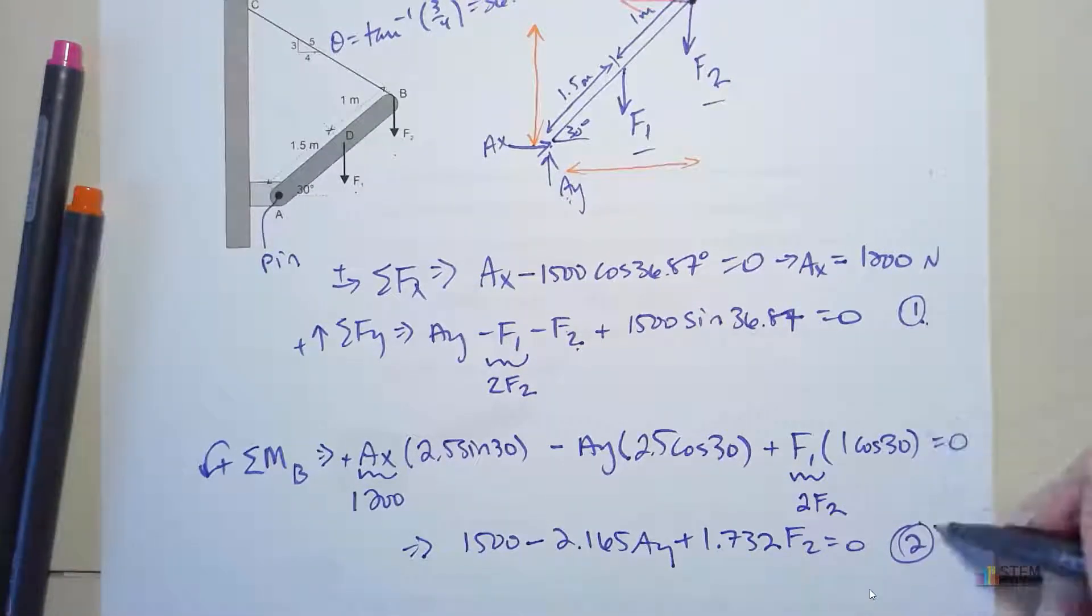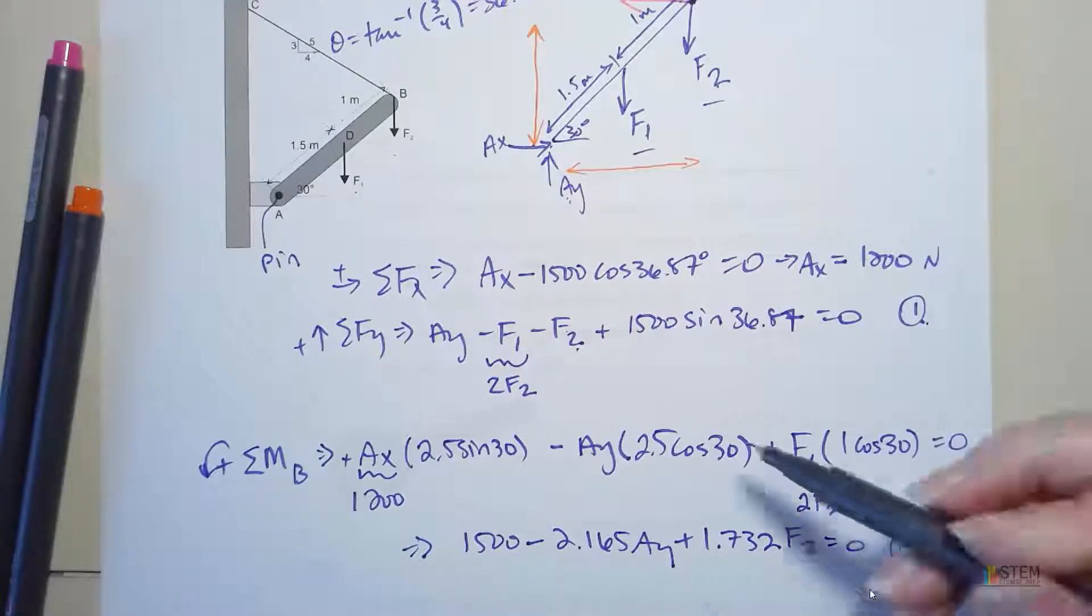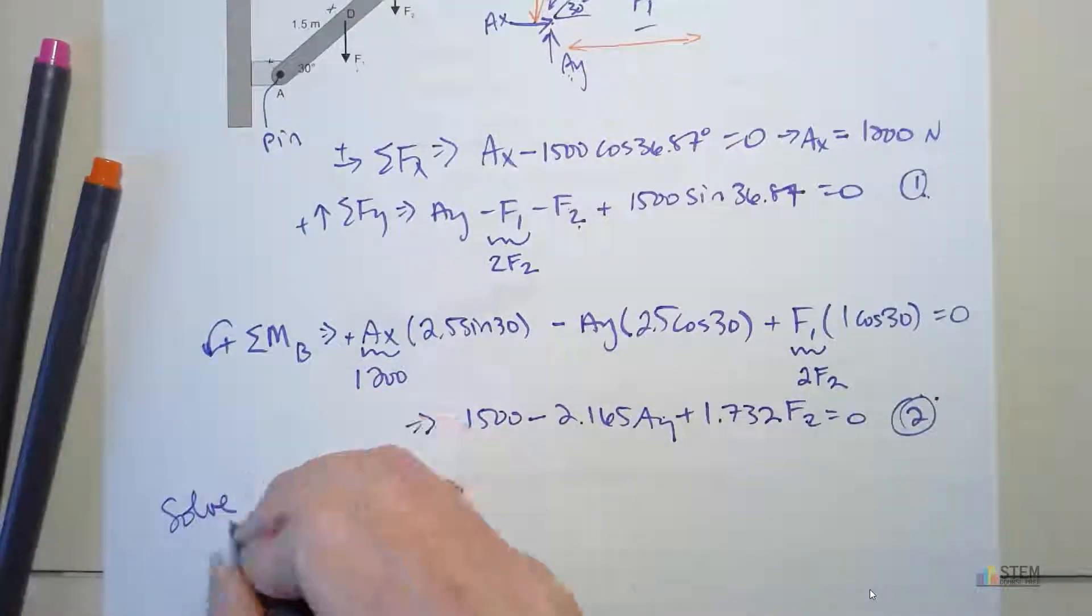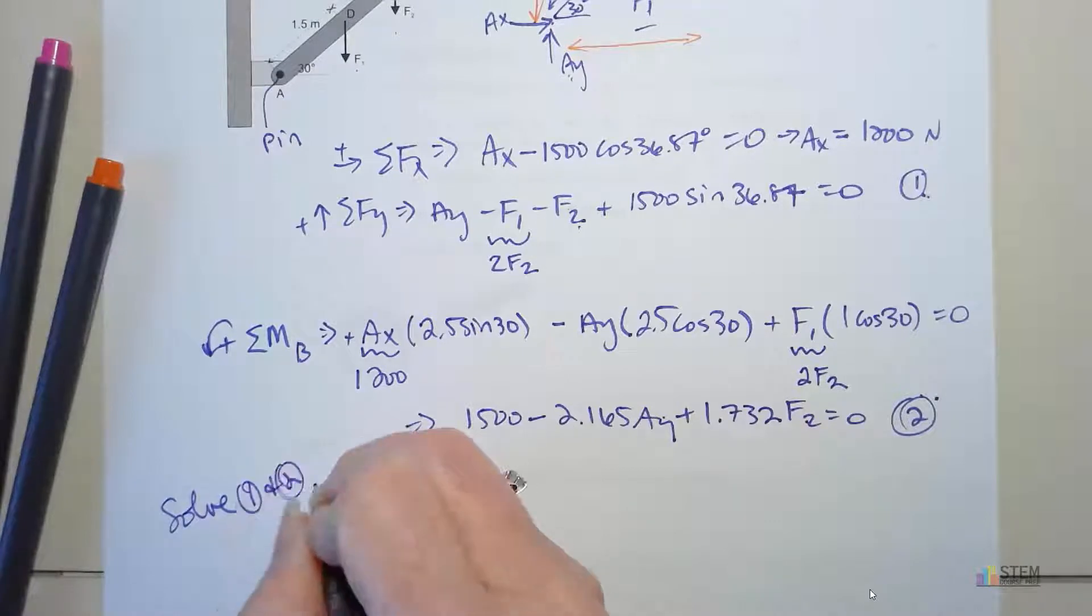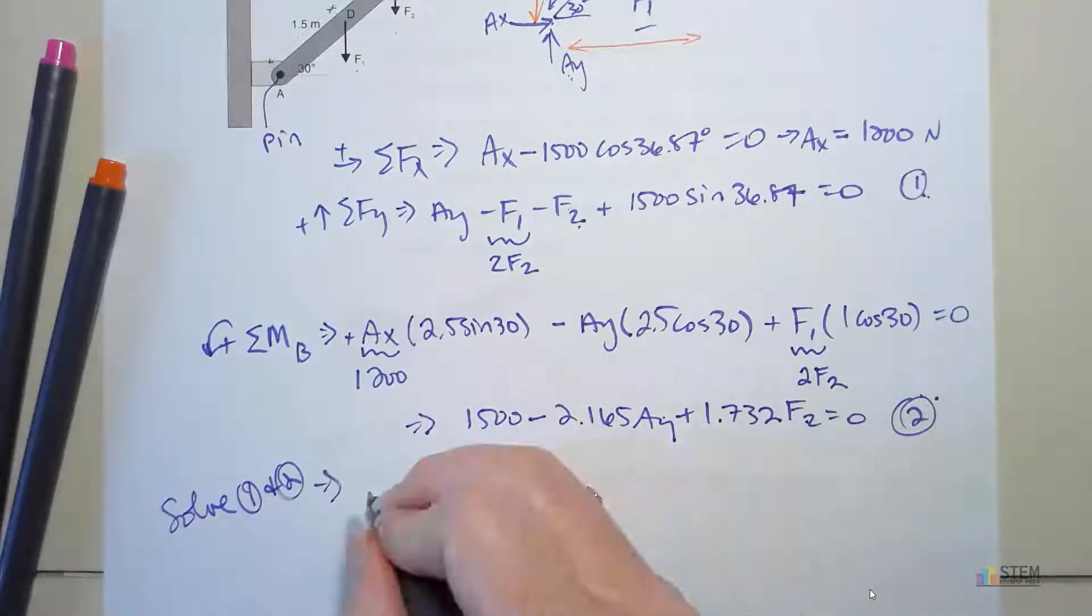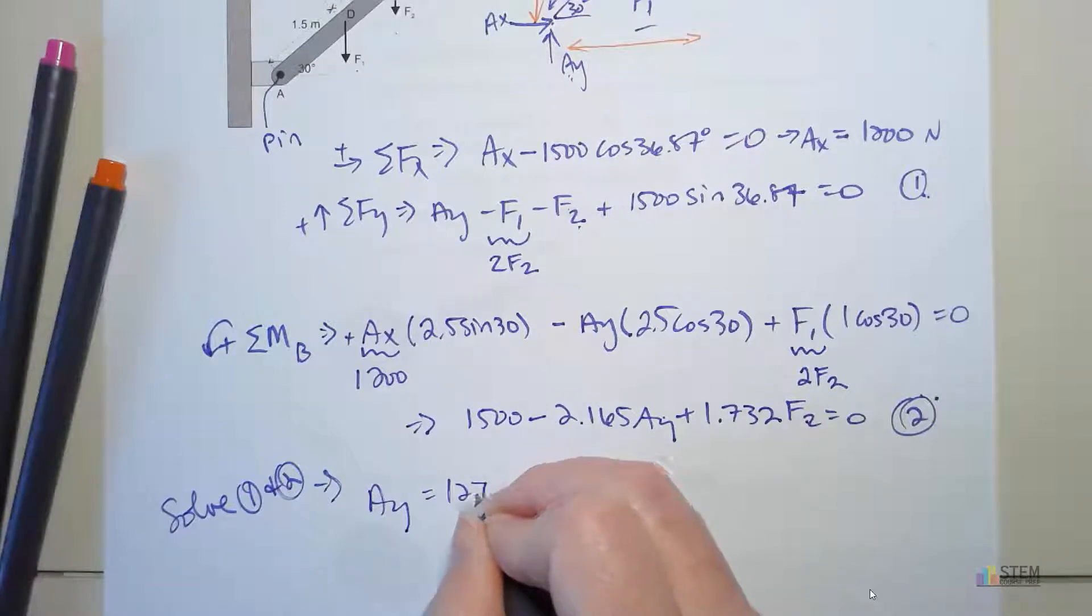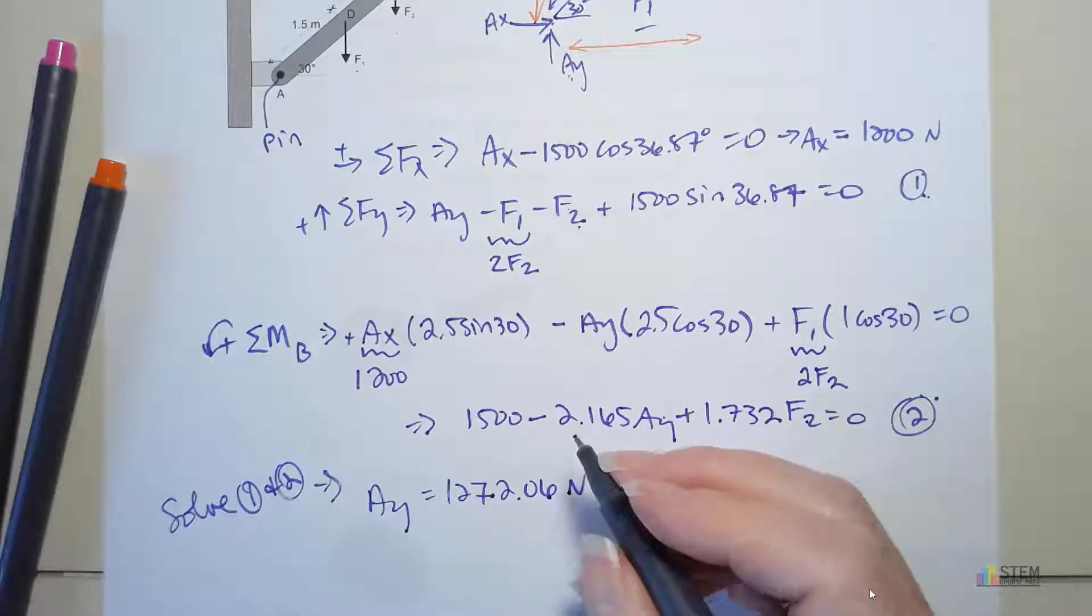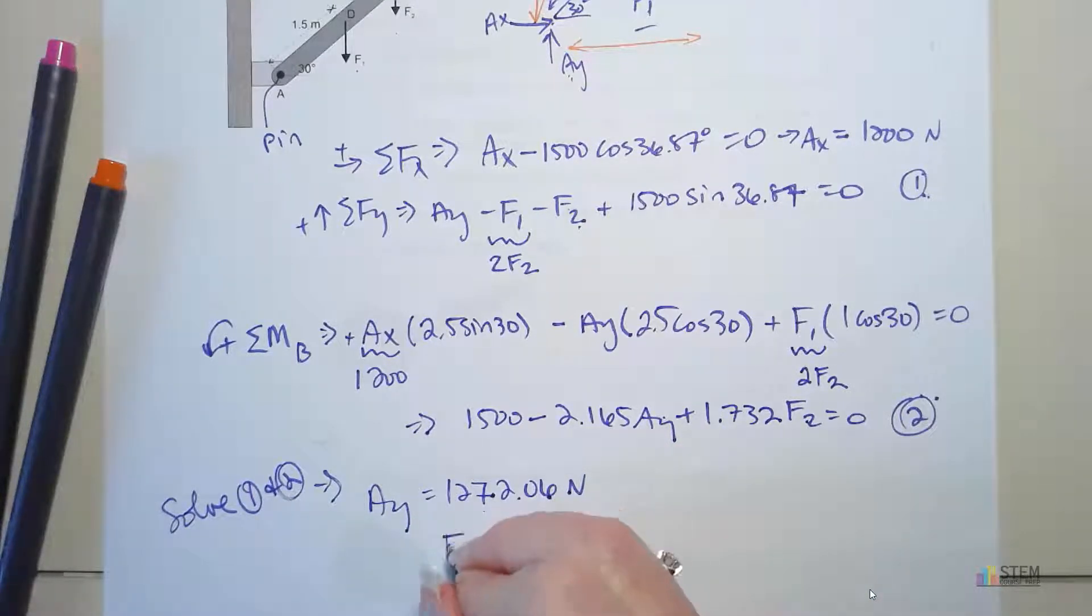If you look, both of these two equations have the same unknowns - Ay and F2. So you can solve those two simultaneously. When you solve, you get Ay is 1272.06 newtons, and then F2 is going to be 724 newtons.